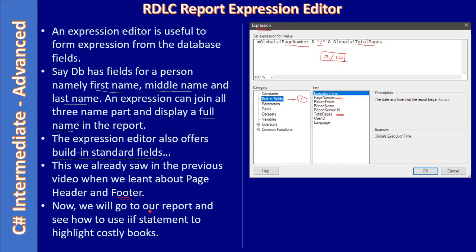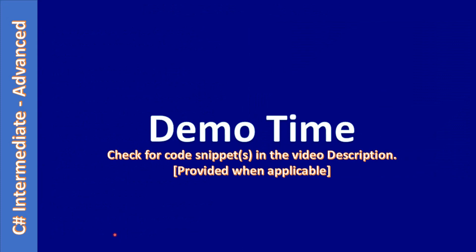Now we will go to our report and see how to use the immediate if statement to highlight costly books. We are considering a book as a costly book when its price is equal to $20 or more than that. Now it's demo time — we will go ahead and implement this.